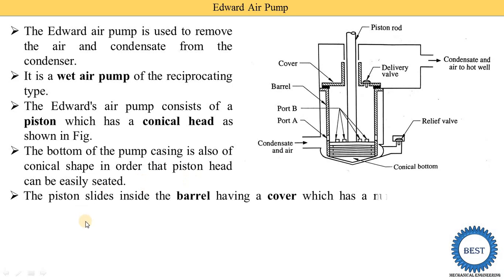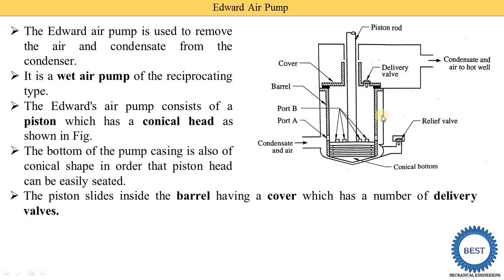The piston slides inside the barrel — this part is the barrel, which has a cylindrical shape. Inside the barrel, the piston reciprocates up and down. The upper end of the barrel is covered by a cover, and on the cover there are a number of delivery valves provided.